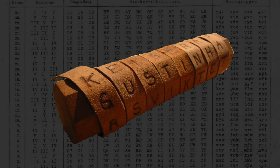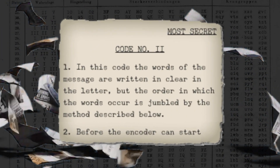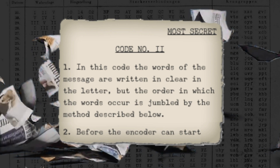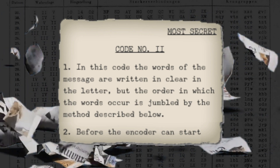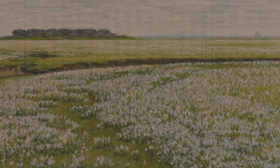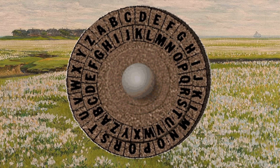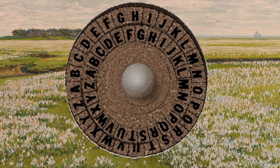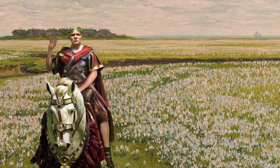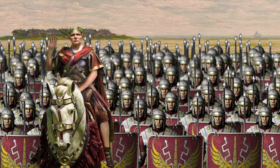Cryptography involves creating ciphers, which employ mathematical procedures called algorithms to transform messages into unreadable jumbles. One of the earliest known ciphers is the very famous Caesar cipher, used by Julius Caesar to securely send messages to his army personnel, which only they knew how to read.